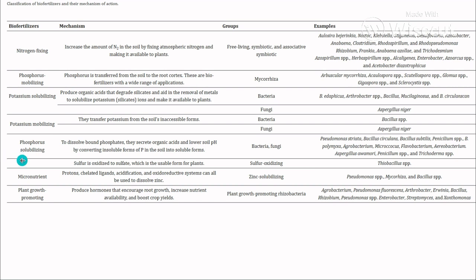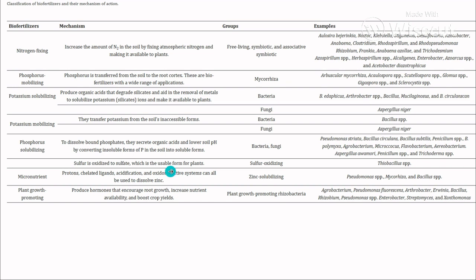Phosphorus-solubilizing biofertilizer dissolves bound phosphate by secreting organic acids and lowering soil pH, converting insoluble forms of phosphate to soluble forms that plants can utilize. This is carried out by bacteria and fungi, for example Pseudomonas species, Bacillus circulans, Bacillus subtilis, Penicillium species, Agrobacterium, Micrococcus, Thiobacillus, Aspergillus species, and Phycoderma species. These phosphorus-based biofertilizers also oxidize sulfur to sulfate, converting it from an unusable to a usable form for plant uptake. Sulfur oxidation is carried out by sulfur-oxidizing bacteria such as Thiobacillus species.